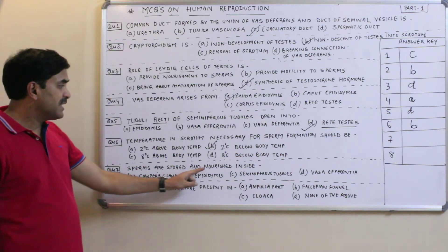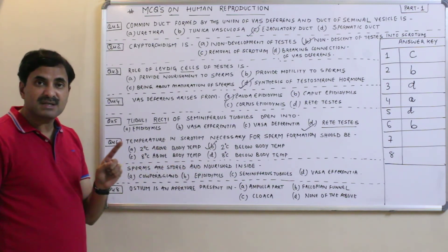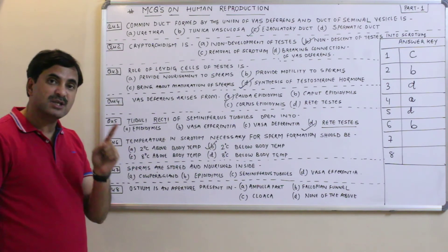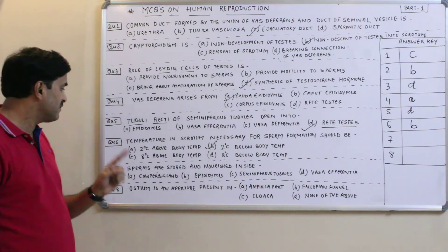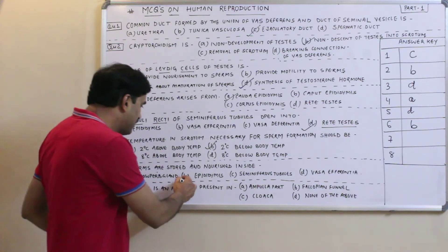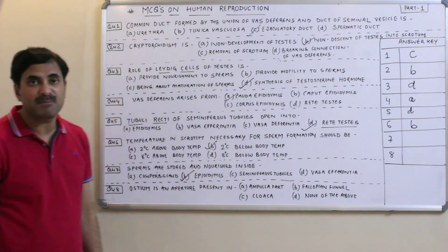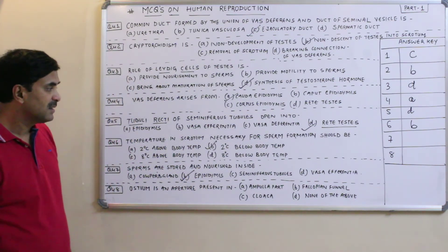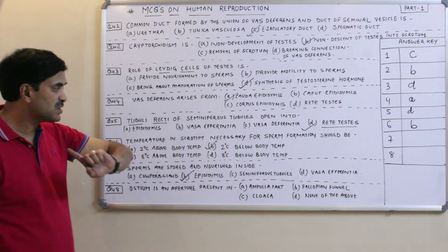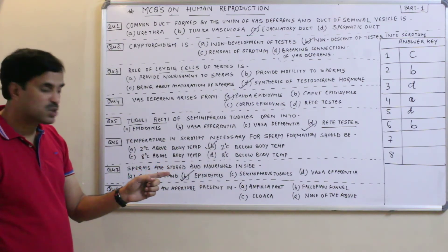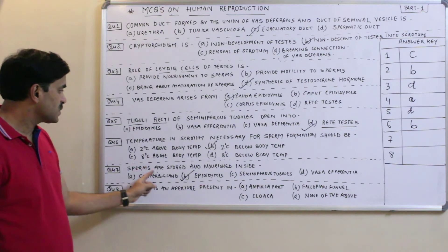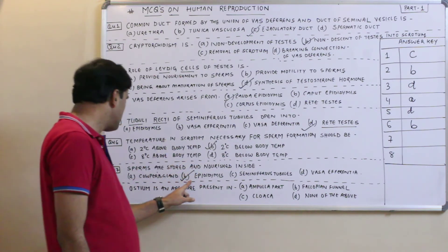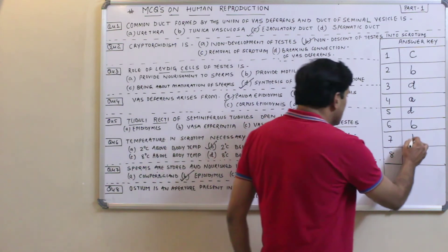Question seven: Sperms are stored and nourished inside which structure? Sperms are temporarily stored and nourished in the epididymis. Cowper's gland, seminiferous tubules, and vasa efferentia are not concerned with sperm storage. So always remember — sperms are stored and nourished inside the epididymis. Question seven has the answer B.